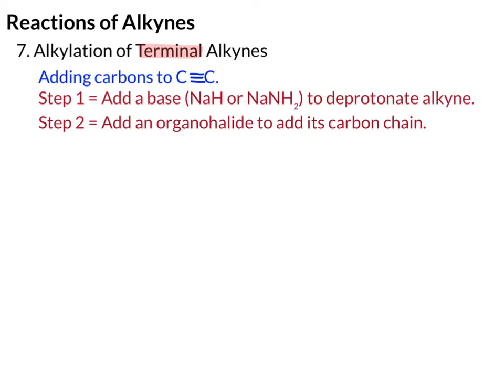An alkylation means we're adding carbons, and in this case we're adding carbons to the triple bond. This will be a two-step process. First, we add a base — we'll be using either sodium hydride or sodium amide to deprotonate the alkyne C-H. Then in the second step, we'll add the organohalide to add its carbon chain. So step one is a proton transfer, and step two is nucleophilic attack and loss of leaving group.